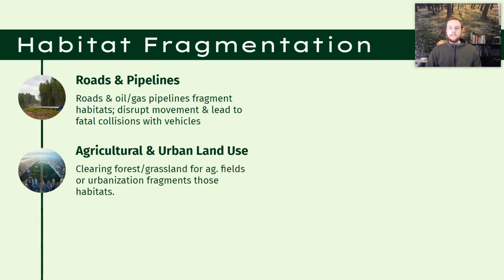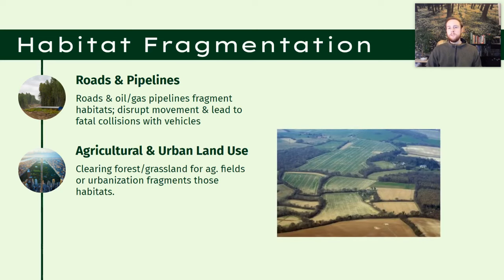Another cause is agricultural land development. When we build cities or put in more agricultural fields to feed more people, we fragment habitats. What was once a continuous forest ecosystem gets cut down and replaced with agricultural fields, disrupting that habitat and chunking it into smaller stands of trees rather than a continuous forest ecosystem.